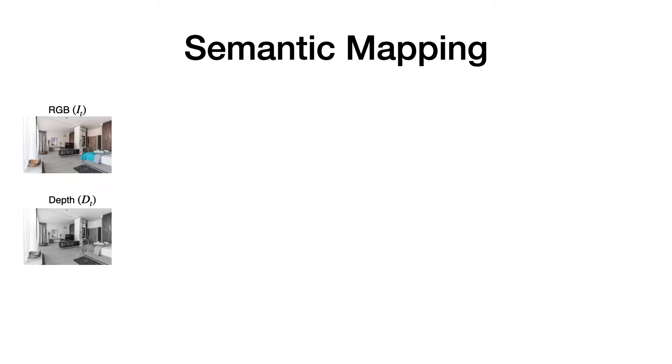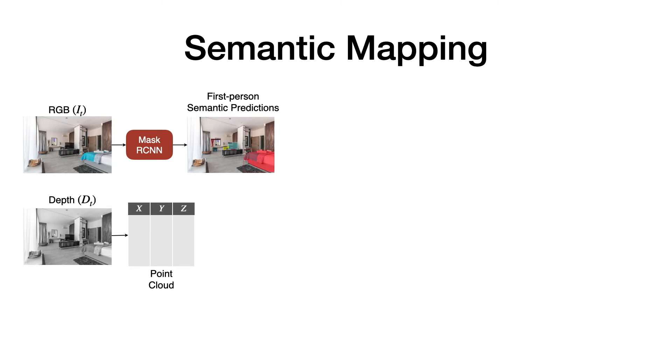To build the semantic map, we first pass the RGB observation to an object detection and segmentation model, such as Mask R-CNN, and we use the depth observation to create a point cloud with XYZ coordinates of all the pixels in the frame. We then associate each pixel in the point cloud with the corresponding semantic category predictions from the object segmentation output.